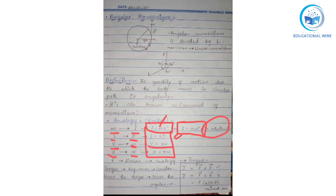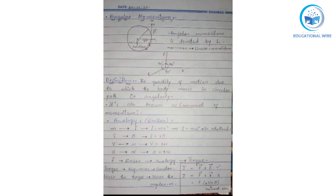Talking about force: in linear motion its analogy is torque. If we are writing torque, it is τ = r × F in vector form — this is correct. If we write τ = F × r (force into position vector), this will be wrong, because order matters in cross products.